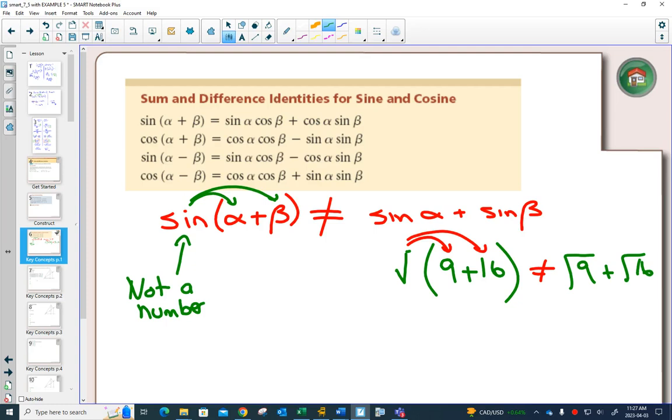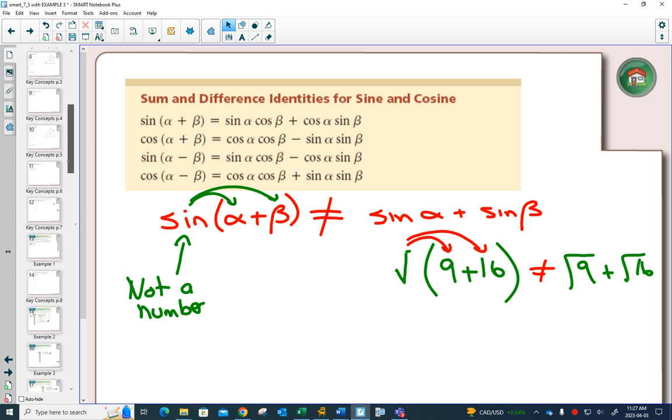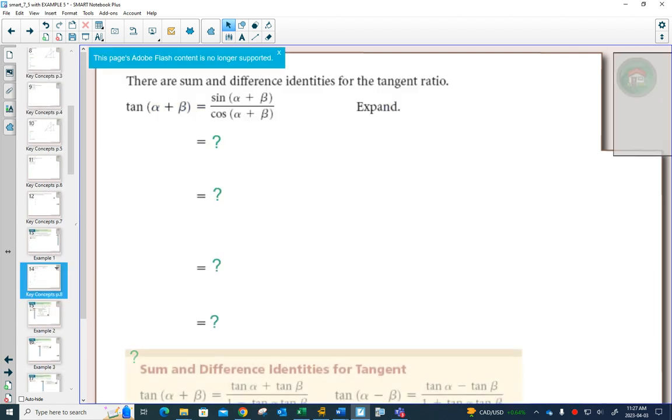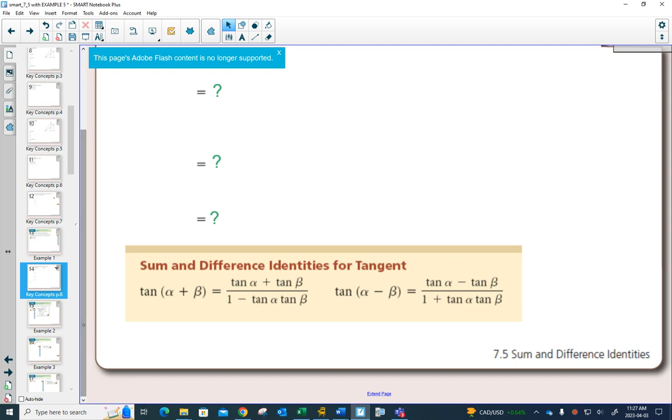So with that in mind, we'll go to example, we're going to start with example 2, actually. Before we get to example 2, right above example 2 is also the formulas for tan on page 638. We have a formula for tan alpha plus beta adding 2 angles, and we have a formula for tan alpha minus beta.